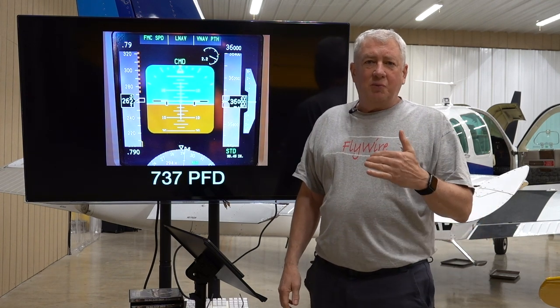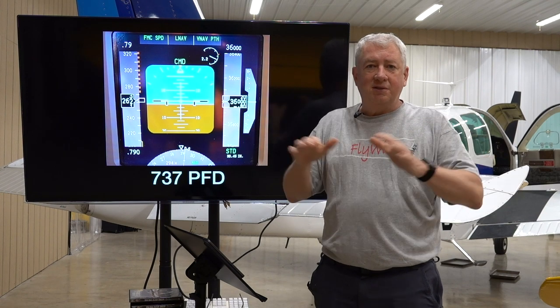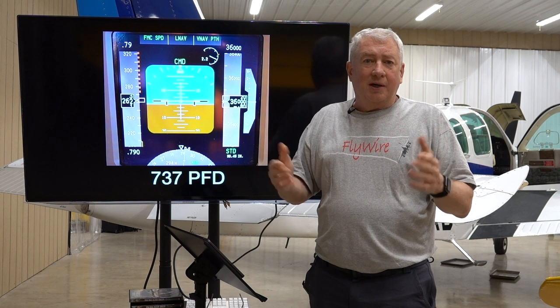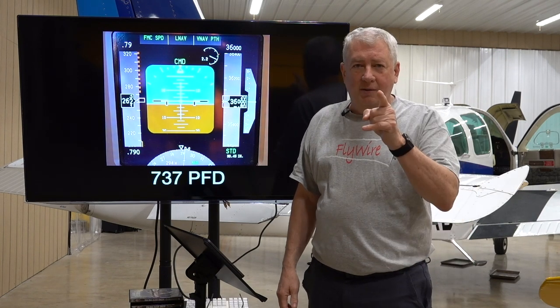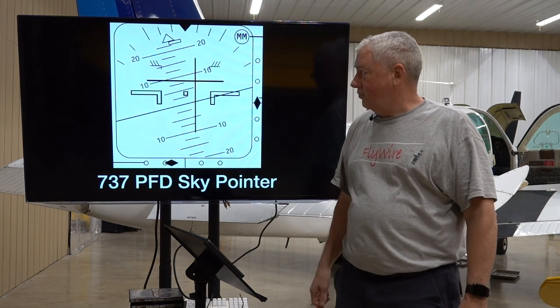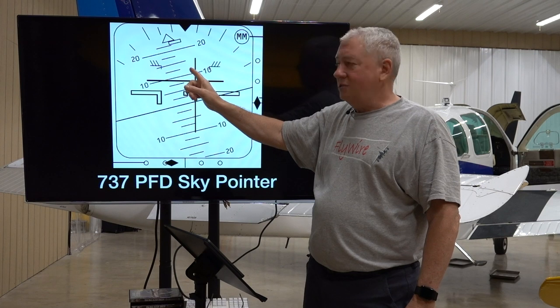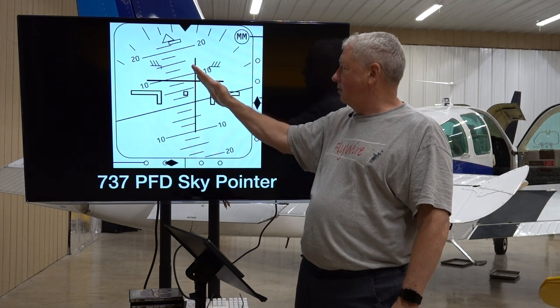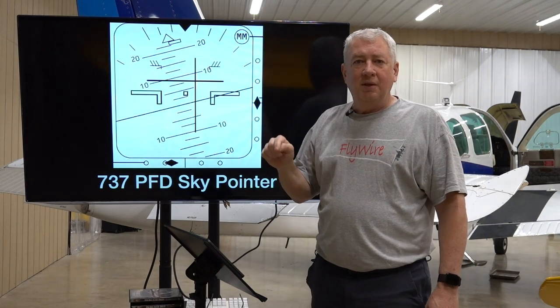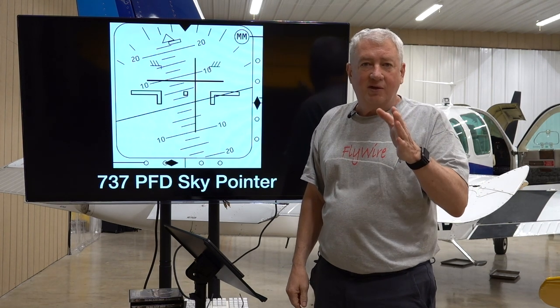If an upset ever happens to you it's going to come unexpectedly, so by definition we have to build SA fast. If we have the world to look at outside the window, the process is very simple — the horizon tells us if we're upside down, nose high, or nose low. Most airplanes don't have aerobatic instruments. If we resort to the attitude indicator we need some systems knowledge. The important thing is whether your airplane has a sky pointer or a fixed index. Here's an example of a sky pointer — the bank index rolls opposite to the airplane roll, always pointing toward the sky.